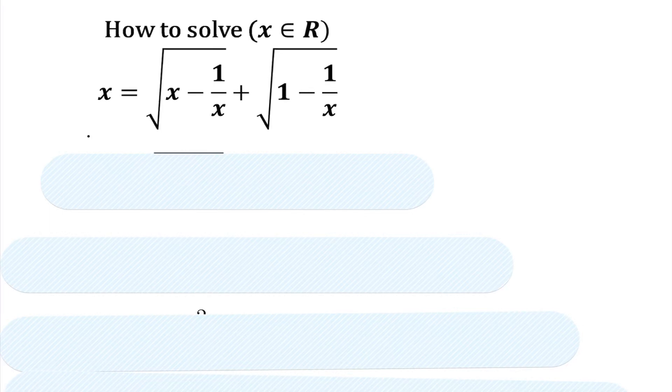All right, we're going to take a look here at a question. They want us to find the value of x given that x equals the square root of x minus 1 over x plus the square root of 1 minus 1 over x.